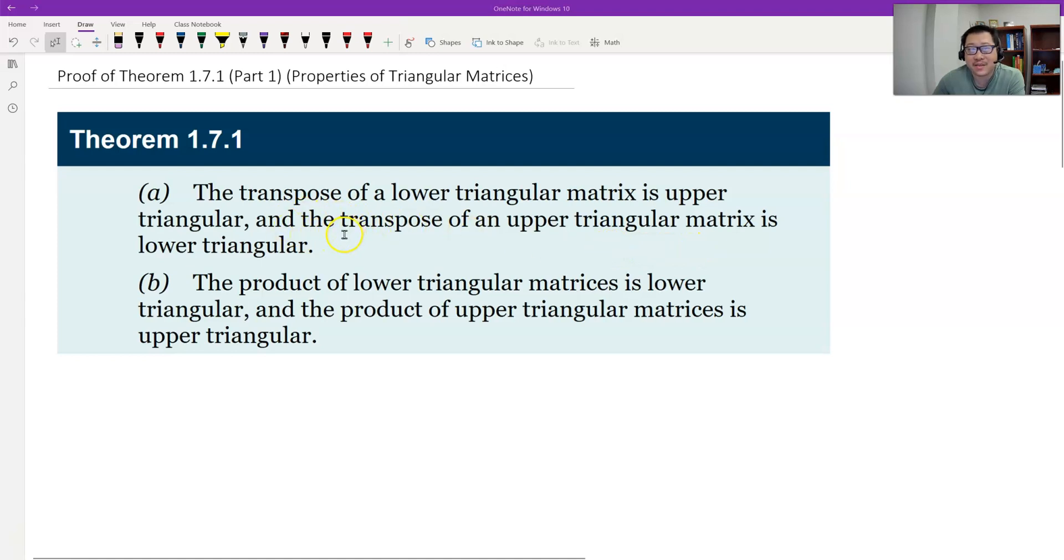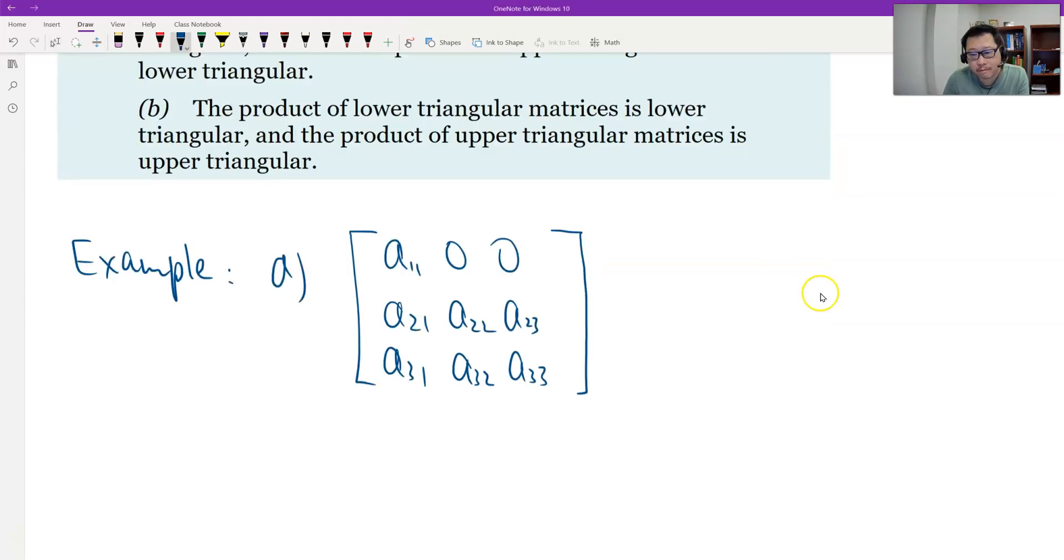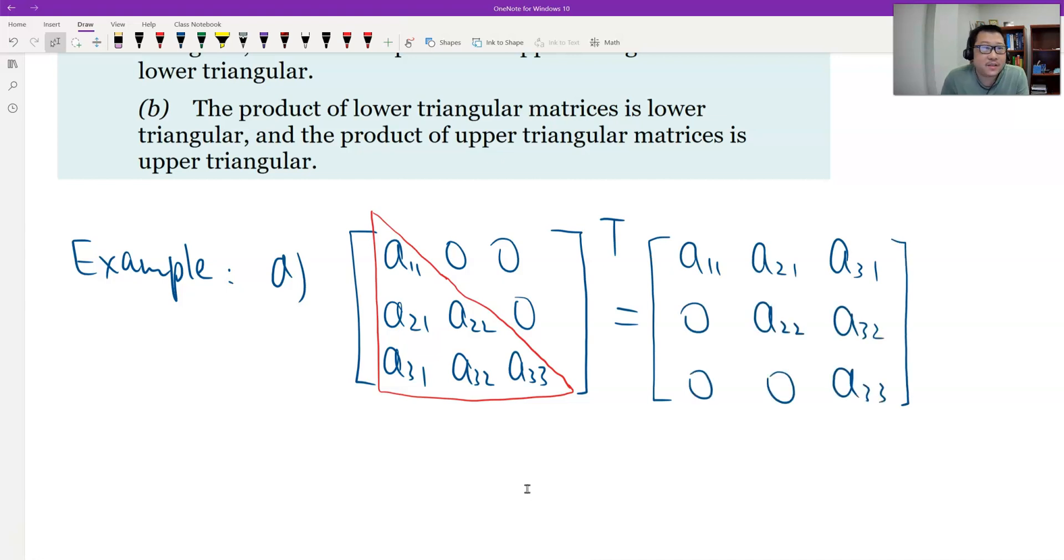That should be obvious, right, by the definition. Let me just give an example. Let me see, this is a lower triangular, right? And what is the transpose? Now we calculate the transpose. By the definition, it's interchange the row and the column. Because this is a square, all you say is just a flip over the diagonal entry. Let's see, it should be like this. Okay, so this is by definition.